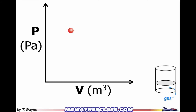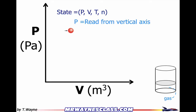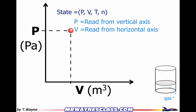To represent it we say that it's a state. The state is defined as pressure, volume, temperature, and the number of moles — all the stuff we use for the ideal gas law, that defines the state of that gas. So the pressure is easy; I'll just read that off the vertical axis. The volume, I'll read that off the horizontal axis.